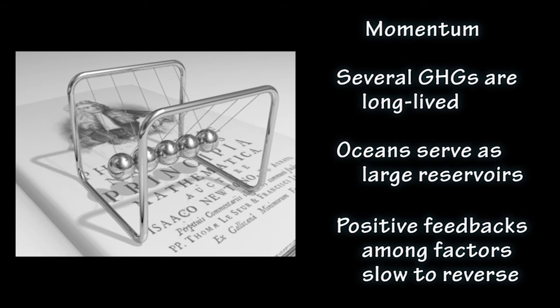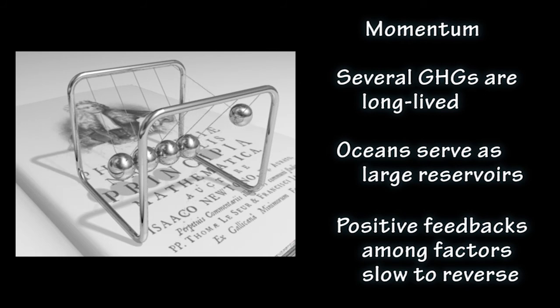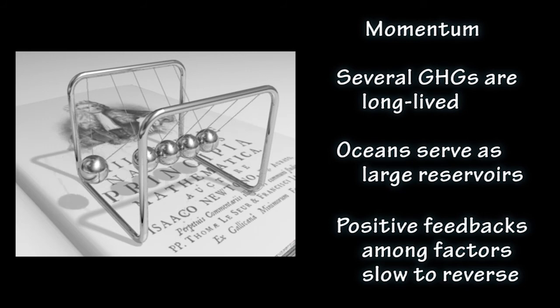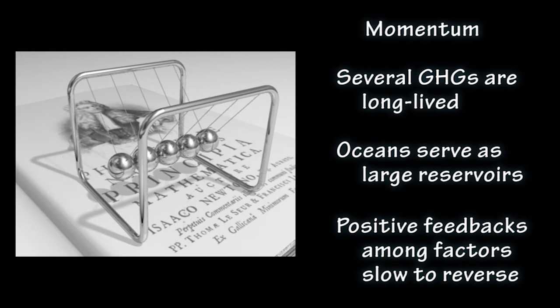Third, positive feedbacks between global warming, ice melting, and declining surface albedo — or between global warming, decomposition of soil organic carbon, and release of sequestered carbon dioxide — tend to accelerate global warming and will take time to reverse.